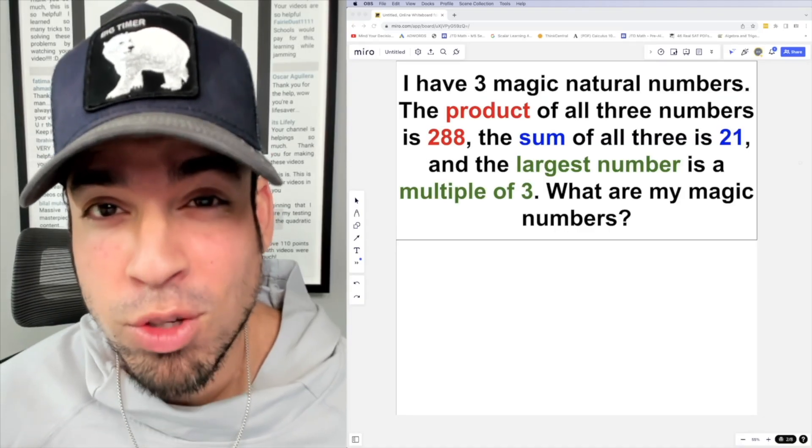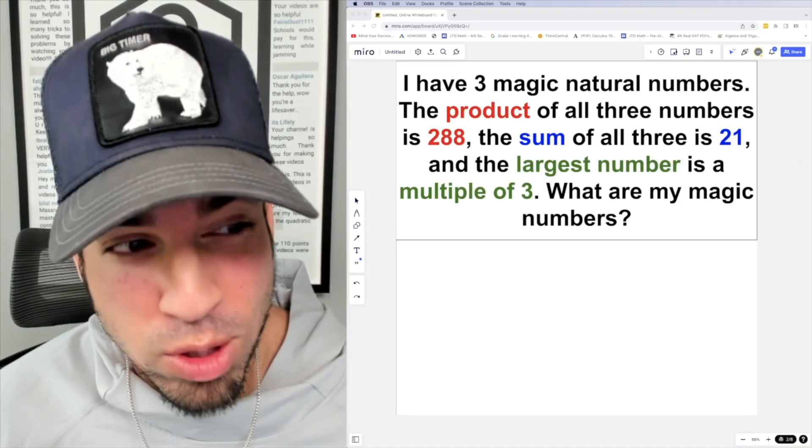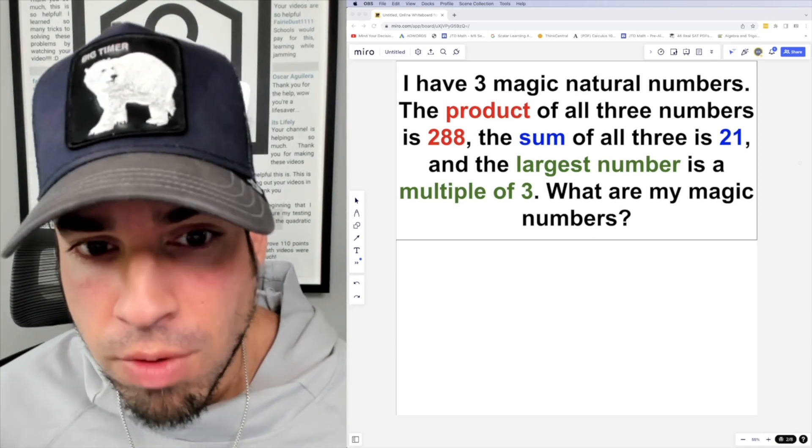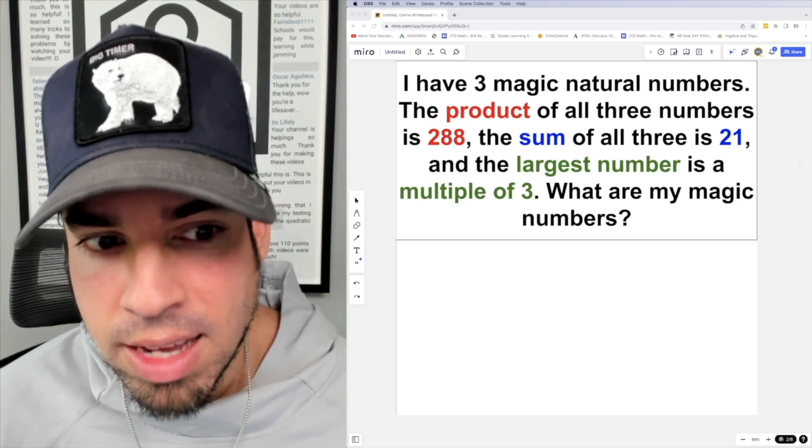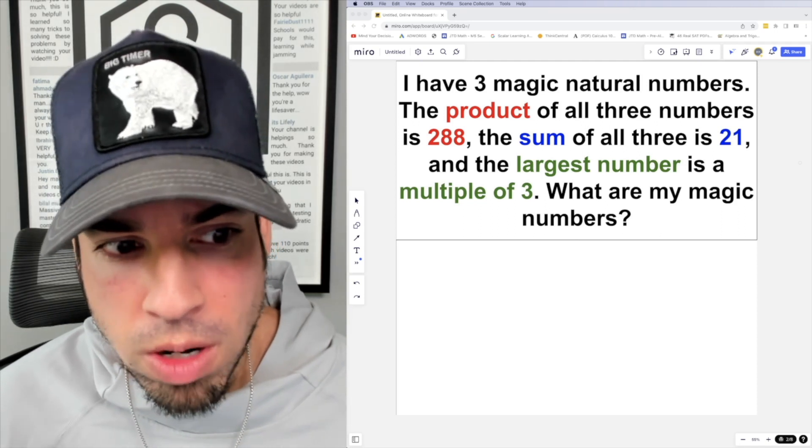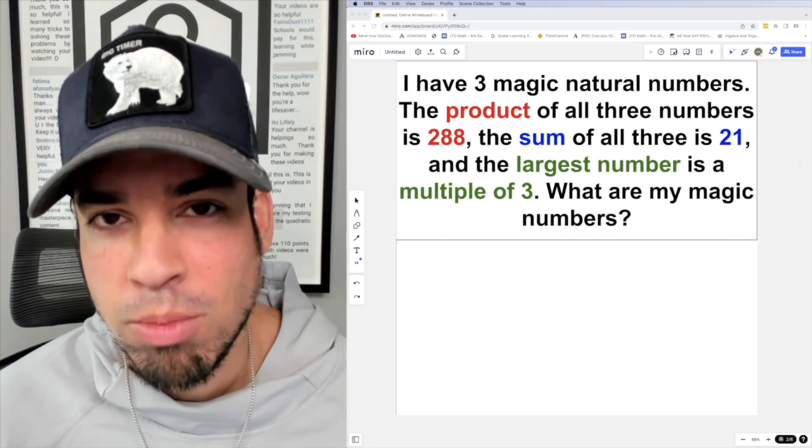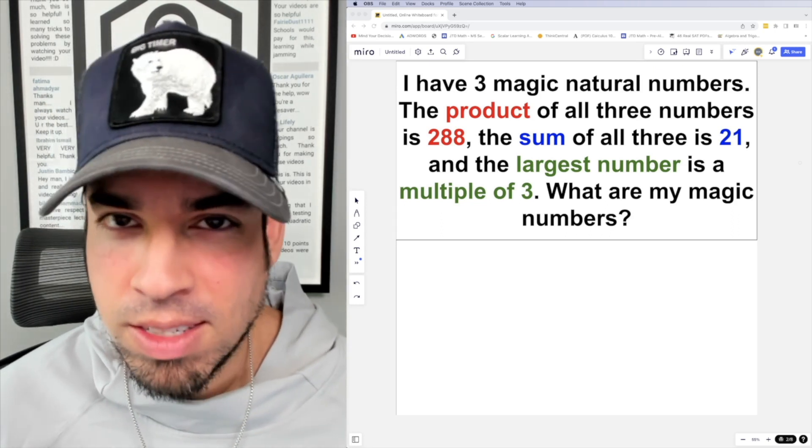What's up everybody and welcome back to another math puzzle. In this one, the question is as follows: I have three magic natural numbers. The product of all three numbers is 288, the sum of all three is 21, and the largest number is a multiple of three. What are my magic numbers?